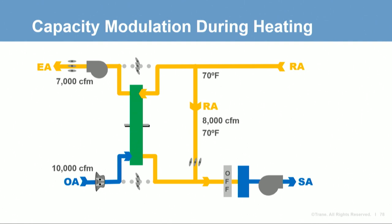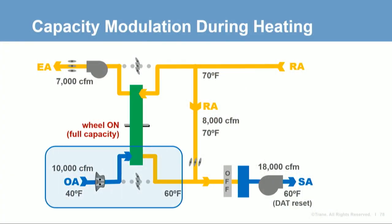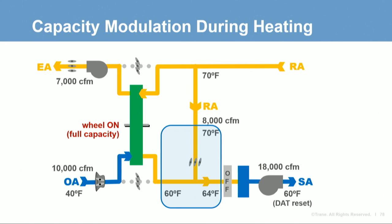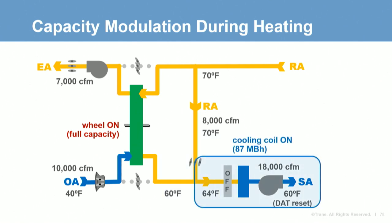Looking at the same example system at a cooler outdoor condition of 40 degrees: the VAV system is delivering only 18,000 CFM of supply air, and the discharge air temperature set point has been reset up to 60 degrees. If the energy recovery device continues operating at full heat recovery capacity, it transfers heat from the warmer exhaust air to the cold outdoor air, warming it to about 60 degrees, with a resulting mixed air temperature of 64 degrees. Since this is warmer than the 60-degree set point, the cooling coil must activate to cool the air back 4 degrees — the energy recovery device just overheated the air, requiring recooling.